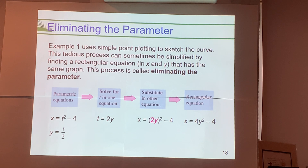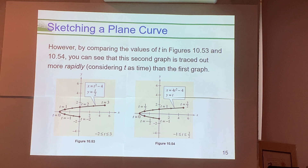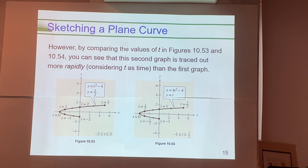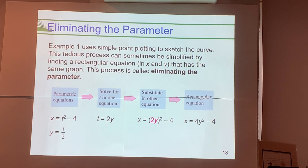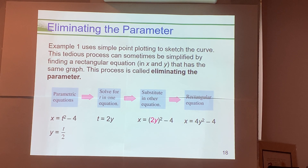If we do the same with that other set of parametric equations — since y = t, we simply replace t with y in the x equation, giving x = 4y² − 4. The rectangular equation from both sets is x = 4y² − 4. The algebra confirms that both sets of parametric equations produce the same curve.